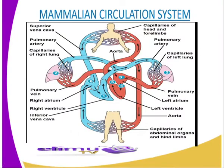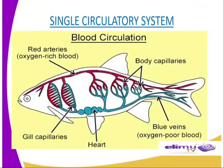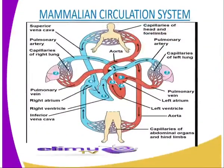Now we are going to have the double circulation system, which is explained using the mammalian heart. The mammalian heart is an example of a double circulation system. In a double circulation system, blood flows into the heart twice for every complete circulation — for example, as in mammals and birds — whose heart is divided into four chambers, whereby we have the two atria and the two ventricles.